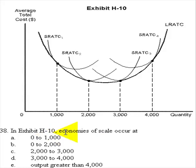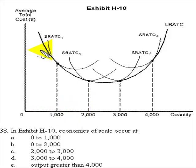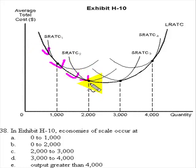In Exhibit H10, economies of scale occur at which one of the following levels? Remember, economies of scale are such that as you produce more and more output, you're able to drive your average total cost down. And we can see that as we keep moving along this average total cost curve, our costs keep falling and falling.